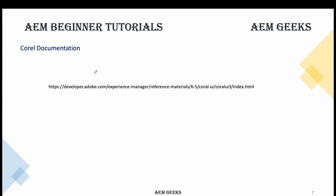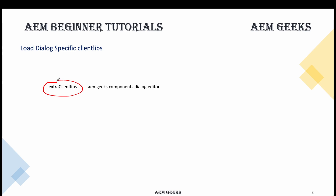One more important thing: whatever script you are writing — for example in jQuery — you will write this script inside a client library, which is the only standard way to write JavaScript or jQuery. If you want to load that client library only for a particular dialogue and only when that dialogue is open, for that scenario we'll use an additional property called extraClientLibs and add this at the dialogue level. In this way the client library will load only for that dialogue and only when it is open.